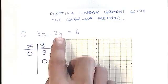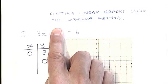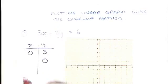And then, if you guess what I'm going to do next, I'm going to cover up the y part and see what the x value is. Now 3x equals 6. 3x makes 6. So to work out x, I've got to do 6 divided by 3, and I'm going to get the answer 2.